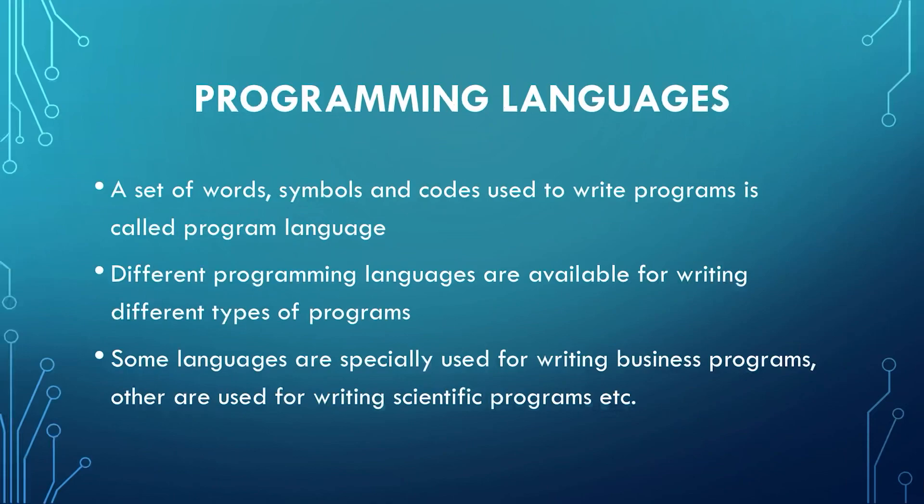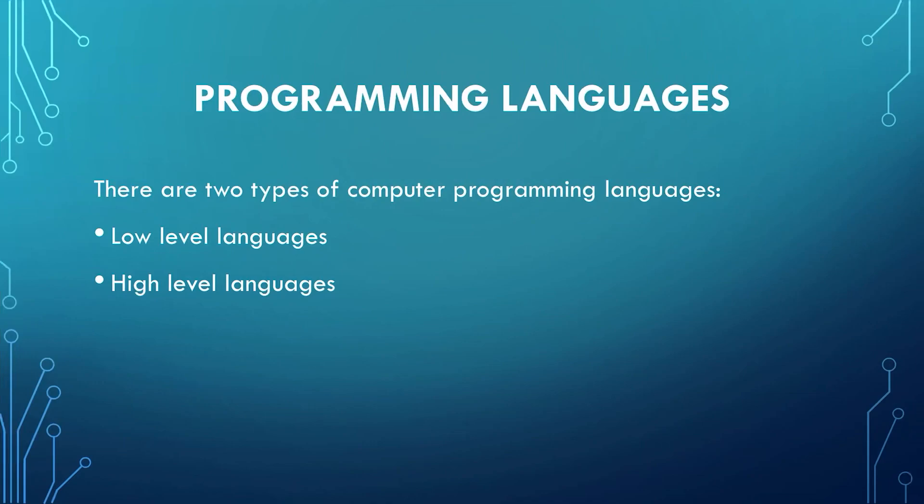A programming language is basically a set of words, symbols and codes which we use to write some programs. We have different types of programming languages available today. We might specifically use some language for writing business programs only, while some others can be used for writing scientific programs. Basically, there are two types of programming languages: low-level languages and high-level languages.